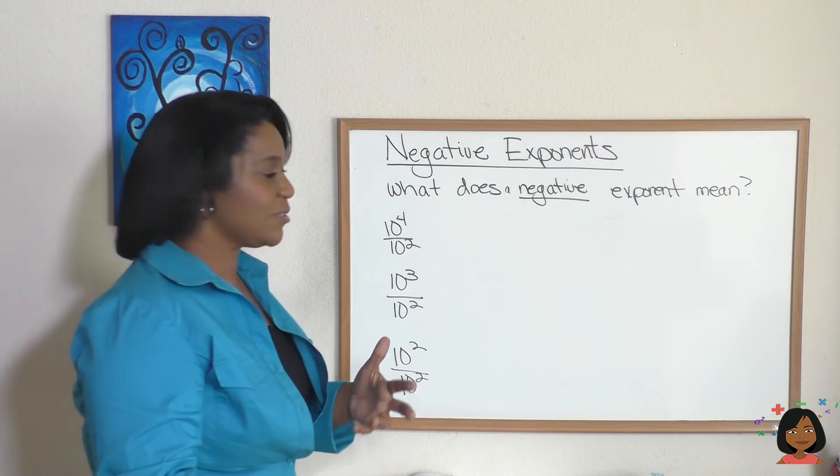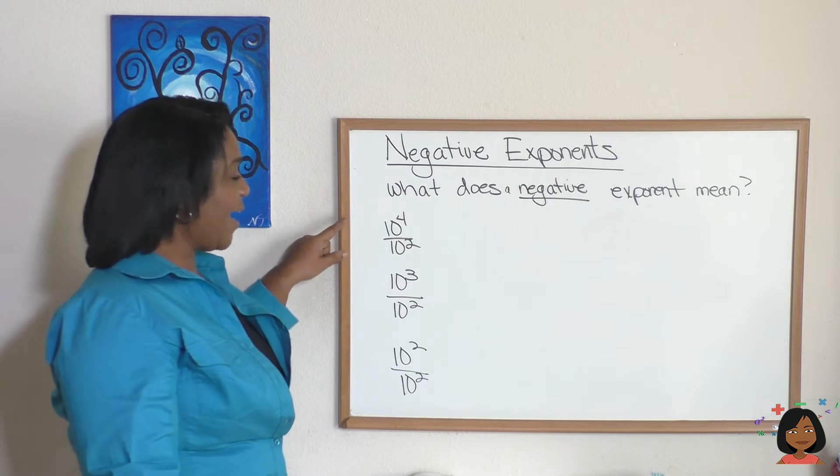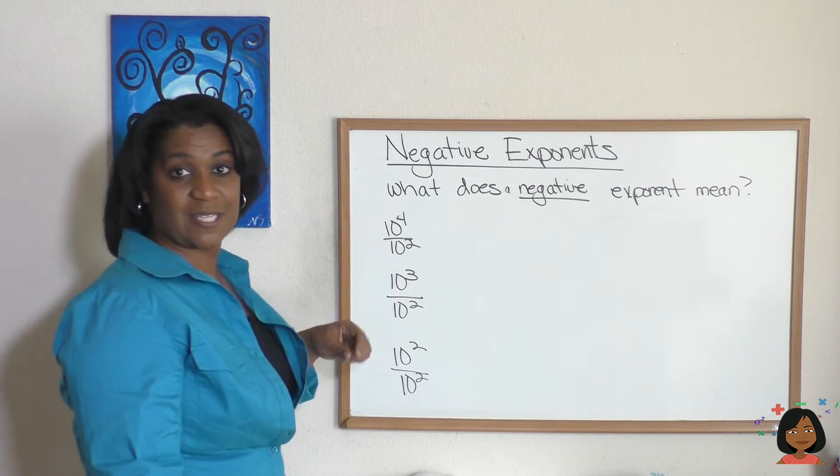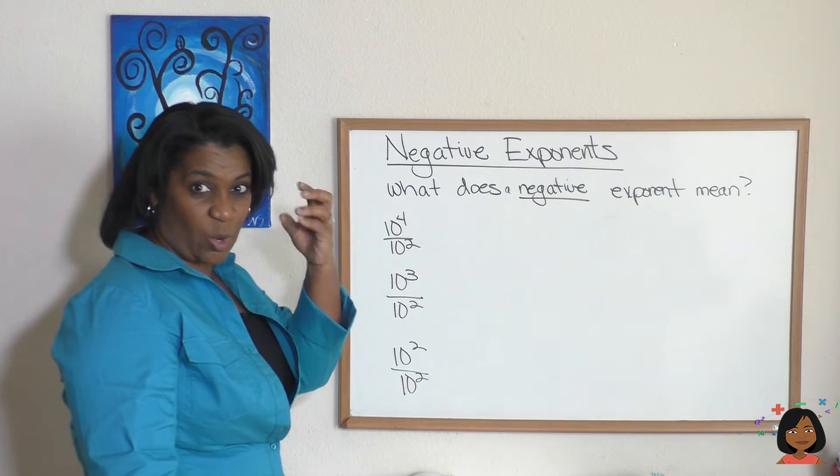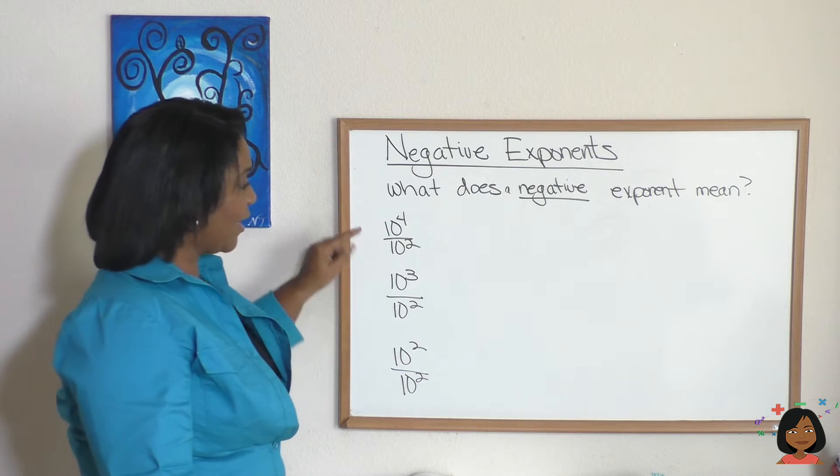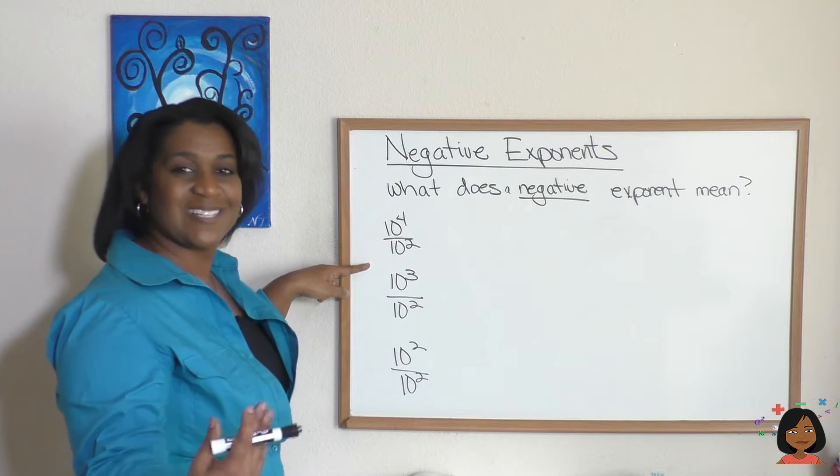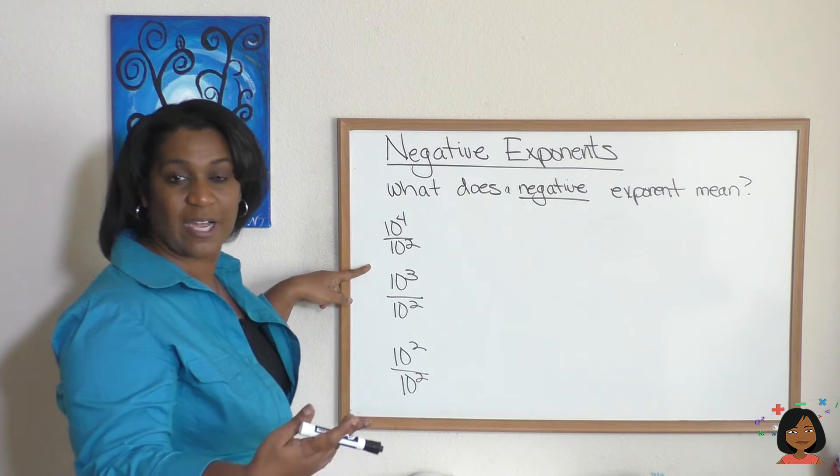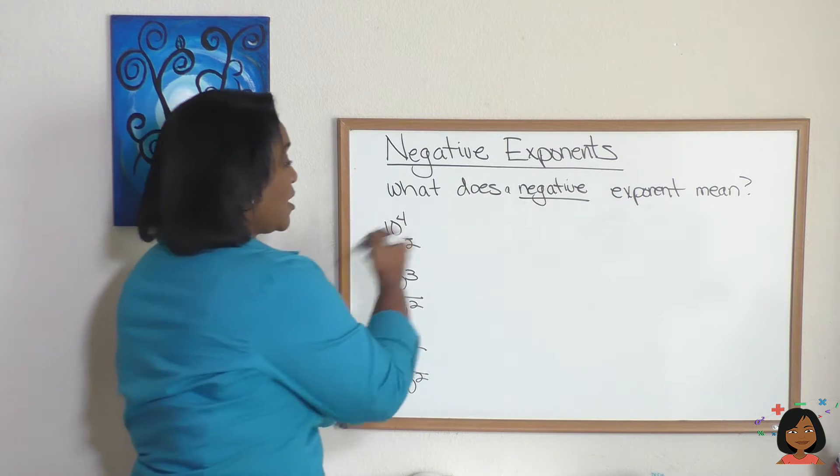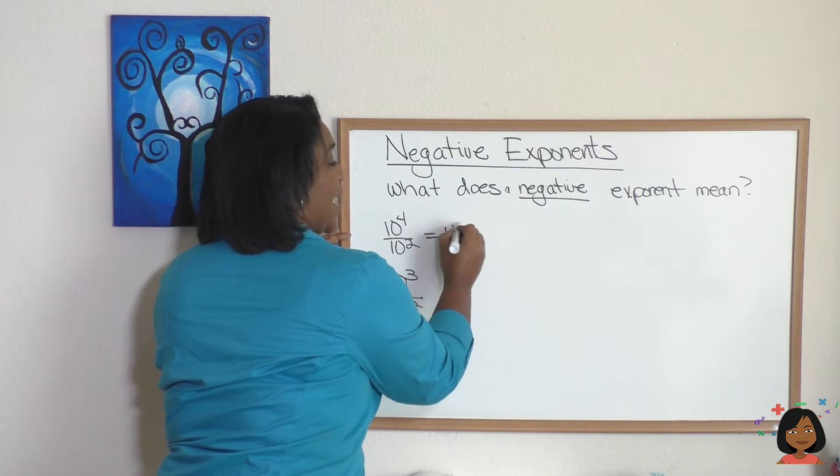We're going to start with positive exponents. Now you might remember when we have a division problem like this, the quick trick is subtract the exponents, right? 10 to the fourth over 10 squared. We subtract the exponents and this answer would be 10 squared.